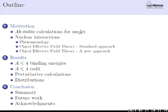Here is the outline of my talk. I'll start by telling you what the goal is in an ab initio calculation for nuclei, then specifically how quantum Monte Carlo works, and why you should care about Green's Function Monte Carlo in particular. Then I'll tell you about nuclear interactions, a little bit of history, why phenomenological interactions have been used up until now in QMC calculations, the standard approach to chiral effective field theory, and a new approach. I'll present results for binding energies and radii for light nuclei with mass number less than four, some perturbative calculations, distributions that may point to observable differences between interactions, and then summarize.